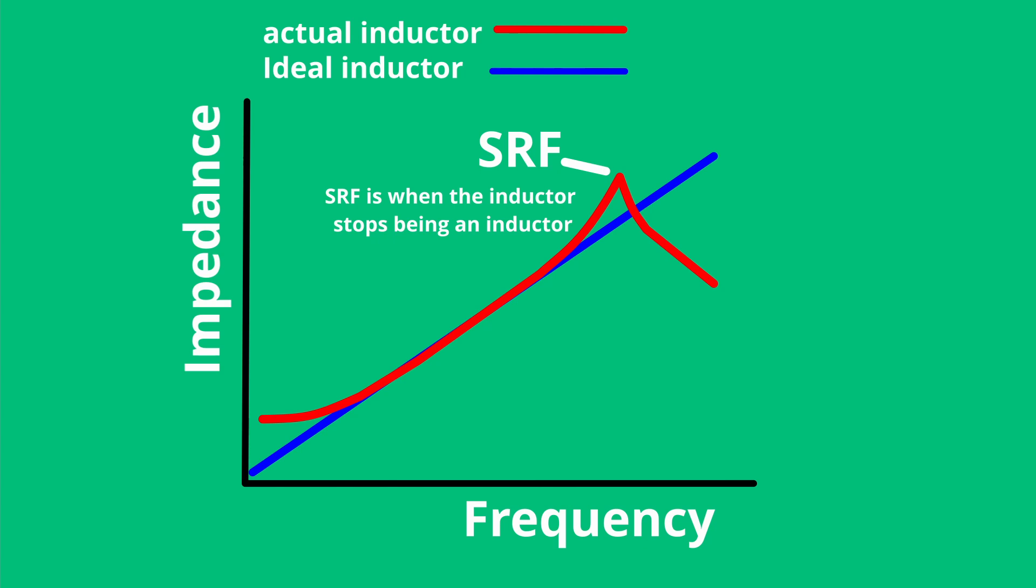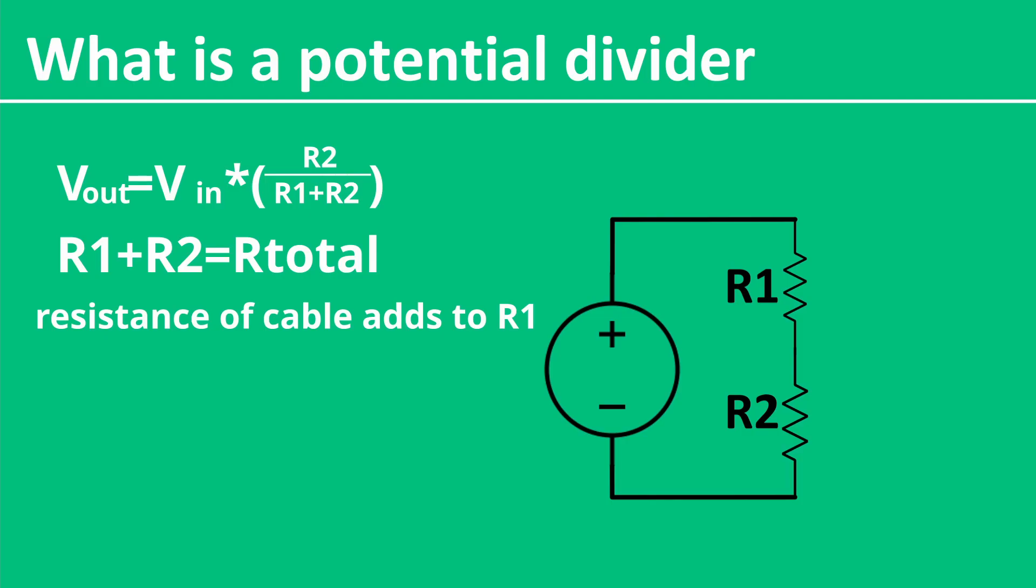I'm not going to explain impedance versus resistance in this video. I've got another one for that. If we take a look back at our voltage divider, as we increase this resistance, we increase R1 and then decrease the amount of voltage reaching the amplifier.